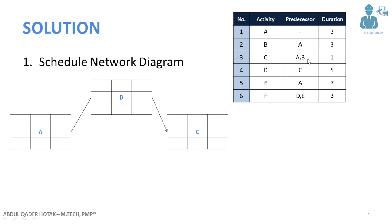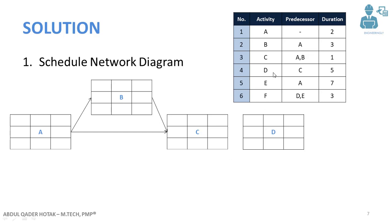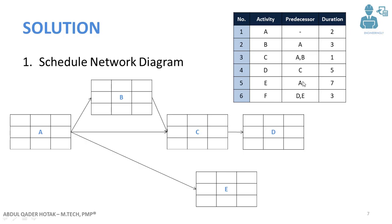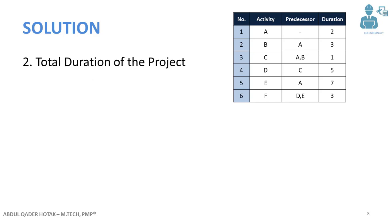Activity D's predecessor is activity C, so we connect it to activity C. Then we have activity F, whose predecessors are activity D and E, so we connect it to both D and E. So here we have the complete network diagram for our project.